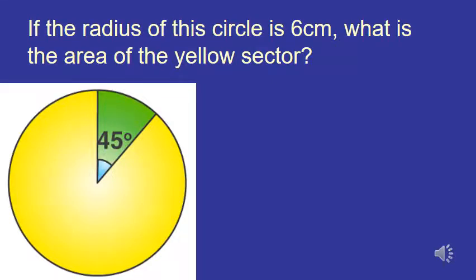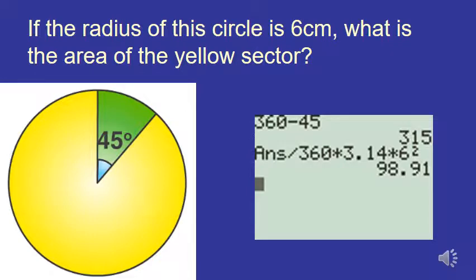And this question says, if the radius of this circle is 6 centimeters, what's the area of the yellow sector? Again, think through that for a minute, see if you can figure out what's going to happen with this one. What makes this a little bit harder is that the yellow sector is associated with a major arc. And the first thing I did is I took 360 minus 45 to figure out that that major arc is 315 degrees. Then what I'd have to do is take 315 divided by 360 times πr², so times 3.14 times 6 squared, and my answer is going to be almost 99 centimeters, 98.91 centimeters.